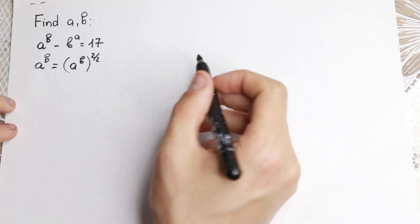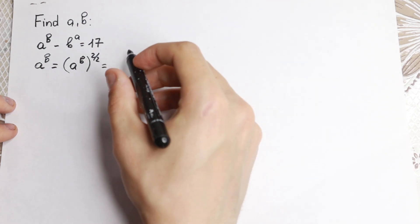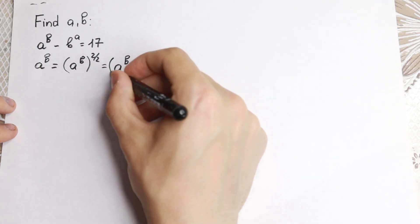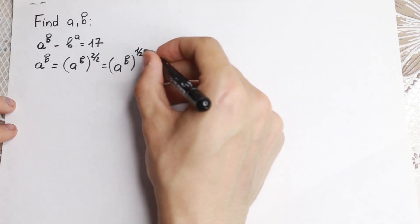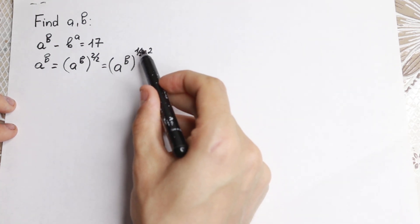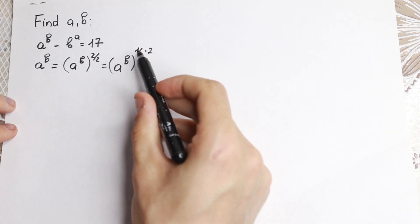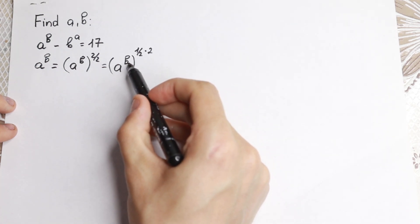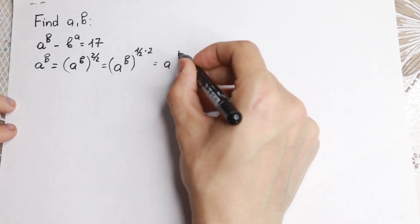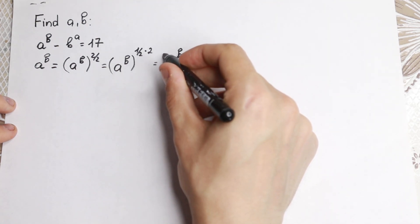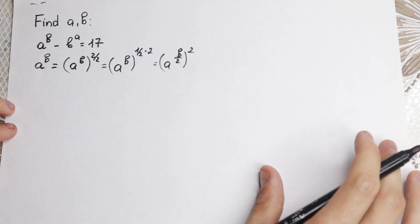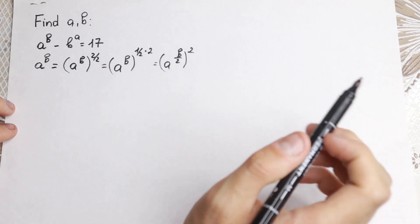But if we know a little bit about power properties, we can write it as a to the power b, raised to the power 1 half, all squared. When we raise to that outer power, we just multiply the exponents. So we can bring that one half inside, near the b. What we get is a to the power b over 2, all squared — and expanding it gives us a to the power b. So nothing changed.